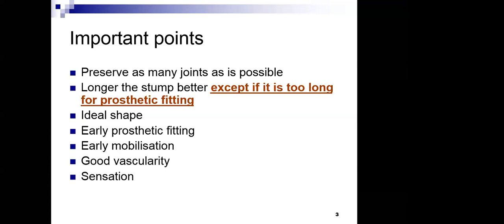Good vascularity and preserving as many joints as possible go together — the surgeon must identify the point of adequate vascularity where amputation will be performed. If vascularity is compromised even above the amputation level, revascularization procedures can be done alongside amputation, though early prosthetic fitting would not be possible in those cases. If there is loss of sensation, it is better to amputate at that part, except when using new-generation prosthetics where it is less of a concern.